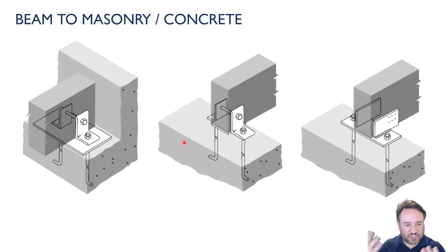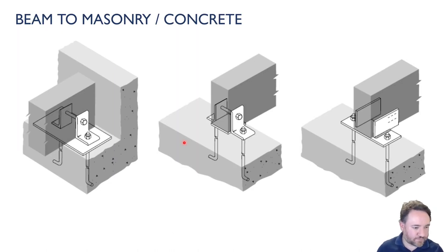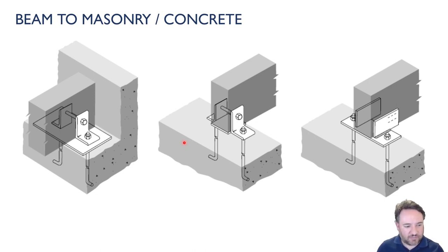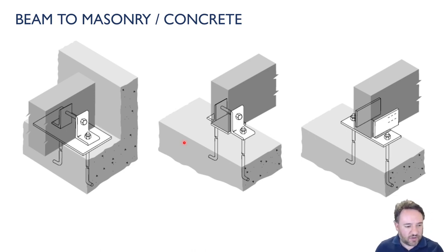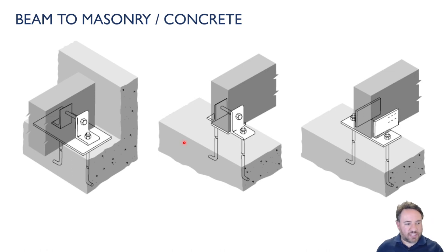For example, I'm going to start with: if I have a beam sitting on masonry, what are the things I need to consider? We'll look at beam-to-beam connections, beam-to-column connections, and column-to-foundation connections — just a few examples and some pitfalls to avoid.